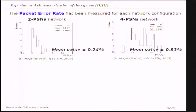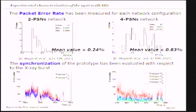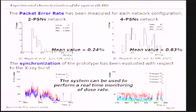We compared the packet error rate — the losses of the wireless interface. The mean value of the packet error rate for the network with four prototypes is a little bit higher than the network with two prototypes, but the losses are acceptable and can be recovered at the end of the acquisition. I also studied the synchronization of the prototypes with the x-ray burst. As shown in the figures, both networks are synchronized — the prototypes are synchronized with respect to each other and with the x-ray bursts, distinguishing signal and no-signal periods.